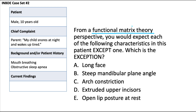If we apply the functional matrix theory, breathing in and out from the mouth — perhaps due to nasal obstruction — will cause a disturbance in equilibrium forces and produce key facial features. The lips would tend to be open at rest to allow air in and out, ruling out option E. The patient's face would also become elongated and the mandibular plane would become steeper as facial muscles stretch and weaken, ruling out A and B. The palatal vault grows higher and the maxillary arch tends to get narrower, ruling out C.